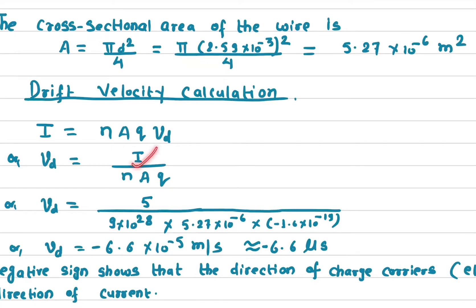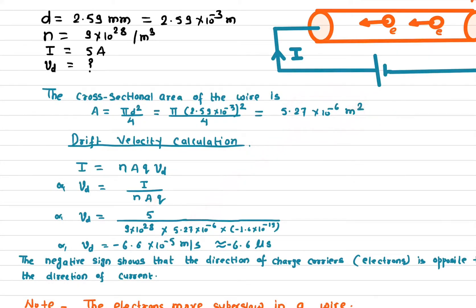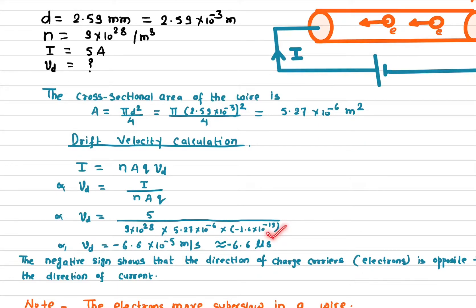Now let's plug in all the values. I is 5 amperes, n is 9 times 10 to the 28 (as given), A is the cross-sectional area we just calculated, and Q is the charge of an electron, which is negative 1.6 times 10 to the minus 19 coulombs. Solving this gives the drift velocity.